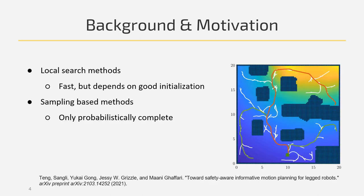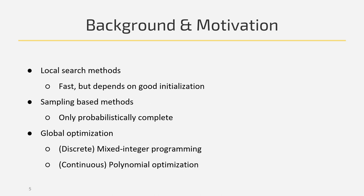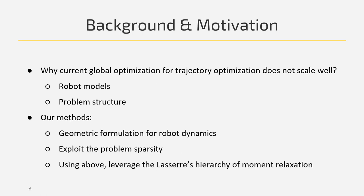Sampling-based methods can return a solution in reasonable time, but may also run forever if the solution doesn't exist at all. Global optimization methods are not subject to initial guesses and are complete — they can obtain a certificate of optimality or infeasibility. But why do current global optimization methods not scale well? One problem is that robot models do not exactly fit into these methods.